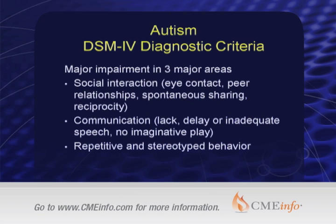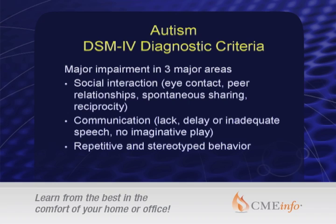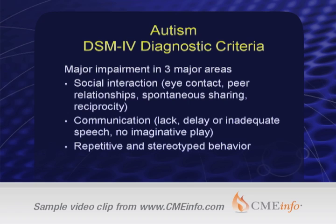We'll start with PDD — disruptions or abnormal development in general. The autism-specific criteria are in three major areas: social interaction, so eye contact, peer relationships, reciprocity, thinking — we talked about the theory of mind concepts a couple of days ago — communication, language, and repetitive and stereotyped behavior. There needs to be a delay or inadequate speech developmentally.